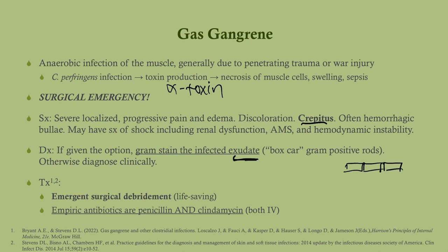Antibiotics are very important in gas gangrene. You give penicillin or a beta-lactam plus clindamycin. Why both? The penicillin kills Clostridium perfringens, and clindamycin — which inhibits the ribosome — shuts down toxin production. So we're killing the bacteria and stopping future toxin production. That is why we give both.